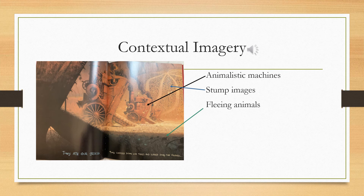Contextual imagery refers to imagery used by the author to provide further detail, context and reinforcement to a written idea. Here, it is heavily used to depict scenes from the story while making direct comparisons to the ideas of the written text. For example, as seen here, the text reads: 'They ate our grass and they have chopped down our trees and scared away our friends.' The image shows a literal animal eating grass in the foreground, stump-like images in the background, and living animals fleeing in both foreground and background — a direct representation of a general written idea as a specific and confronting visual image.